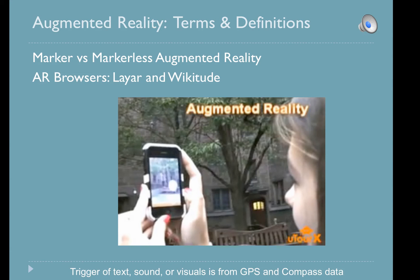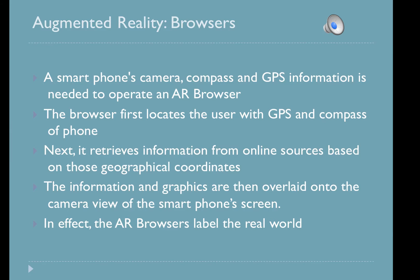What brings augmented reality today to the everyday user is the use of smart devices. Augmented reality browsers like Layer and Wikitude layer your real-world view through your camera lens. Using the camera, compass, and GPS, the browser first locates the user, then retrieves information from online sources about those coordinates and overlays that information on the camera view of your phone. Both Wikitude and Layer are free.